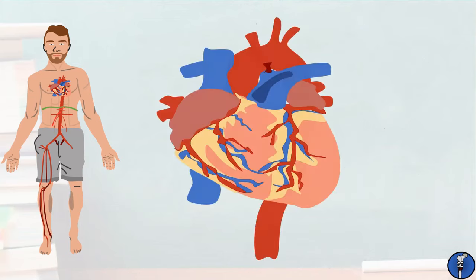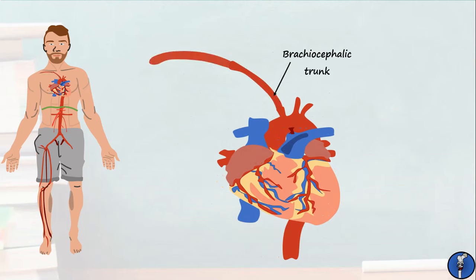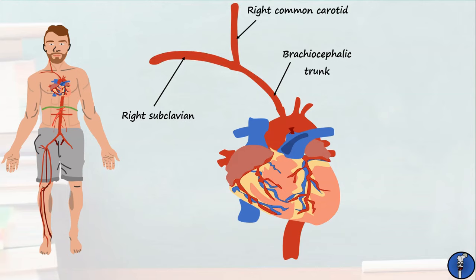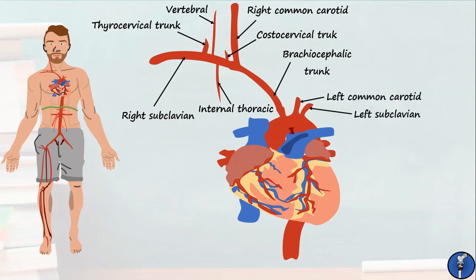Let's go all the way back to the heart and look at those branches that came off the arch of the aorta. The brachiocephalic trunk gives rise to two arteries: the right subclavian artery, which runs deep to the clavicle bone, and the right common carotid, which goes up to the neck to supply the head. An important branch from the subclavian artery is the thyrocervical trunk, which supplies part of the thyroid and some surrounding muscles. Other branches include the vertebral artery, internal thoracic artery, and costocervical trunk. Don't forget that the common carotid and subclavian arteries on the left side arise directly from the aortic arch.